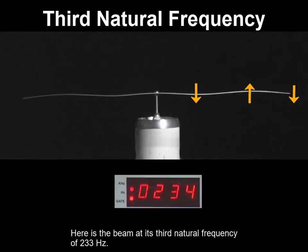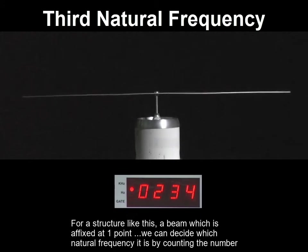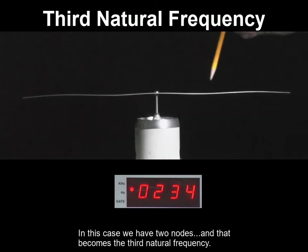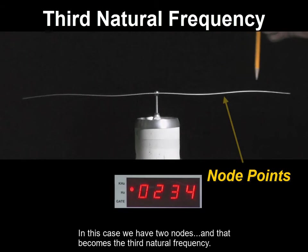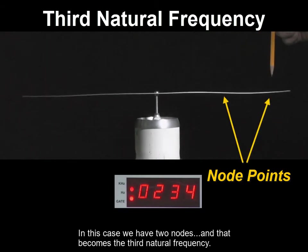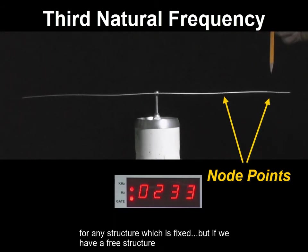Here is the beam at its third natural frequency of 233 Hz. For a structure like this, a beam which is affixed at one point, we can decide which natural frequency it is by counting the number of nodes. In this case, we have two nodes, and that becomes the third natural frequency. That rule applies for any structure which is fixed.